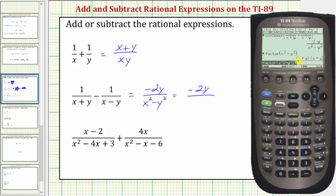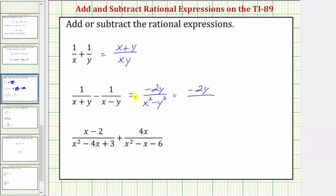Notice the factored form is the quantity x plus y times the quantity x minus y. So we can also express this difference in this form here.